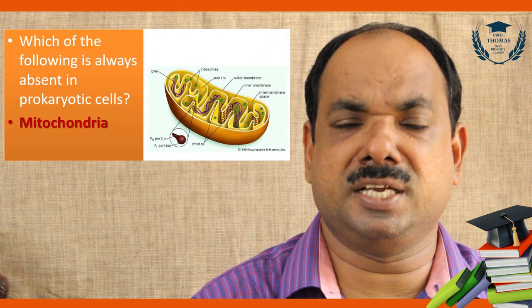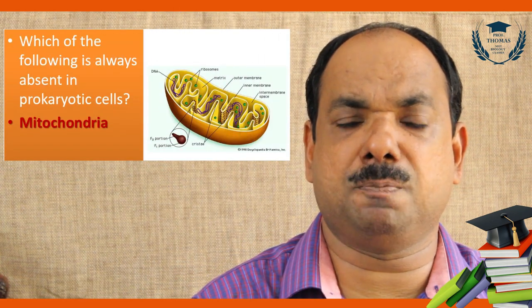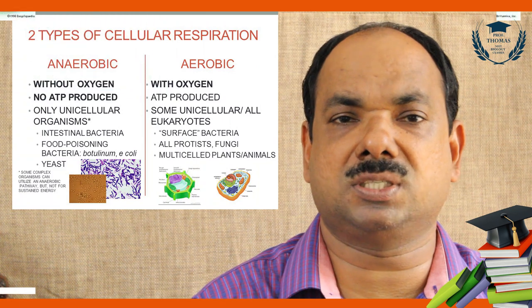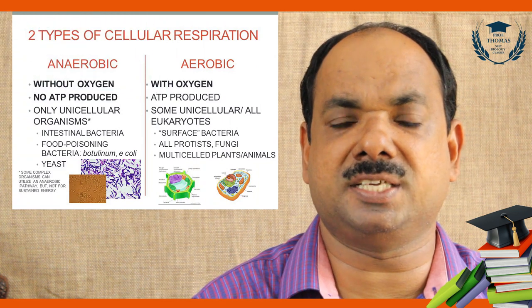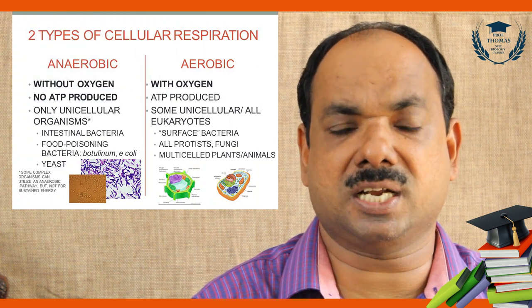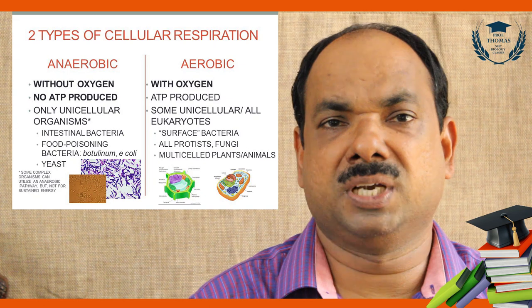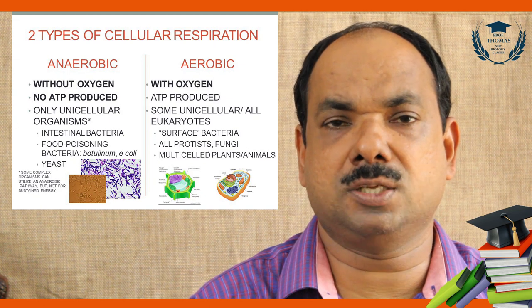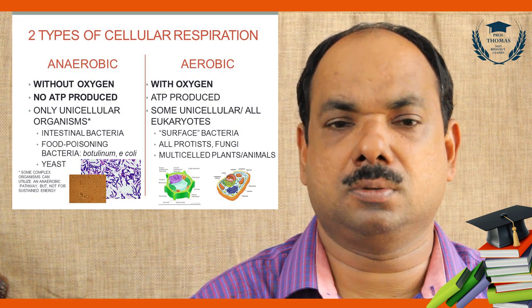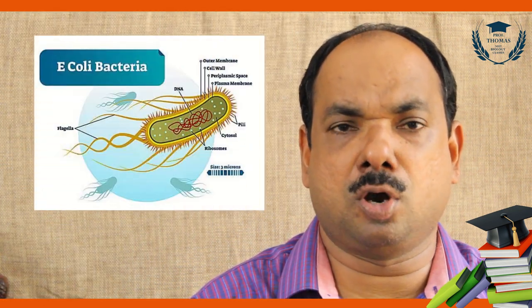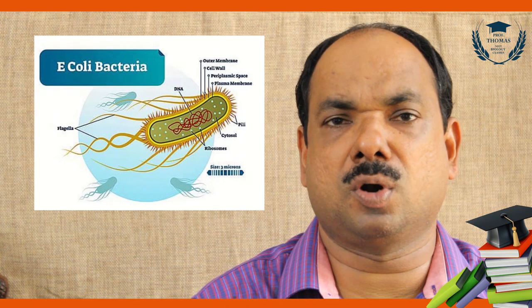Such plasma membrane invaginations are also present in cyanobacteria such as Nostoc and Oscillatoria, called chromatophores. Mitochondria are absent in prokaryotes, and prokaryotic respiration is anaerobic.